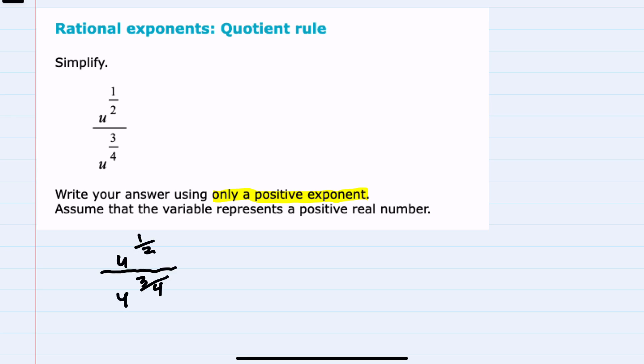I'll start by using the quotient rule, as described in the name of this problem type, which states that whenever we have a variable raised to an exponent divided by that same variable, we will keep the variable — here u — and we will subtract the exponents.